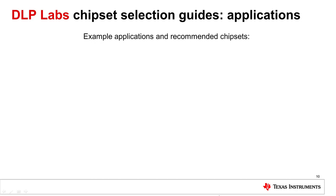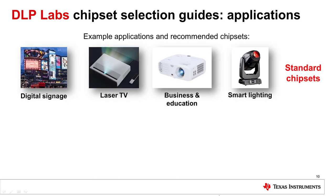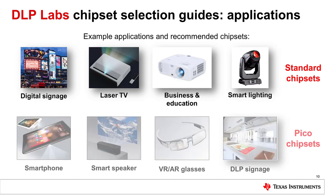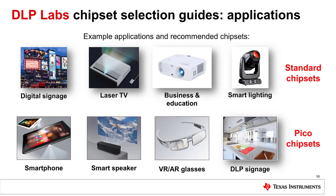DLP Standard chipsets are designed for display applications that demand the highest brightness and performance. Example applications include laser TV, digital signage, and business and education displays, among others. DLP Pico chipsets are designed for display applications that require a small form factor and low power consumption. Example applications include smartphones and tablets, battery-powered Pico projectors and mobile smart TVs, AR and VR wearable displays, and smart home displays.